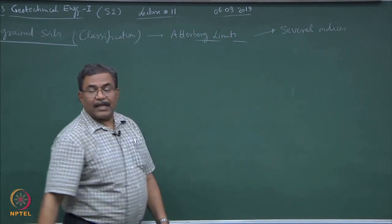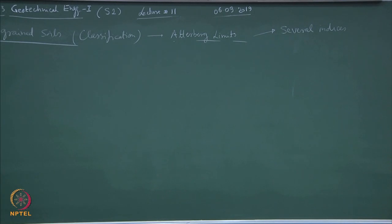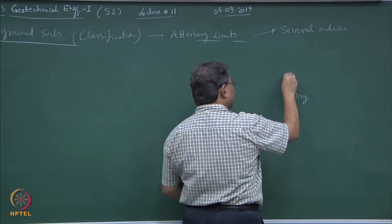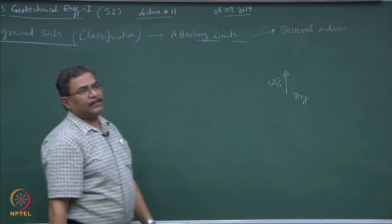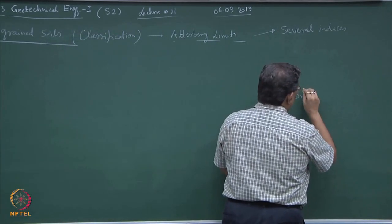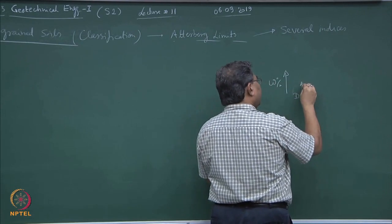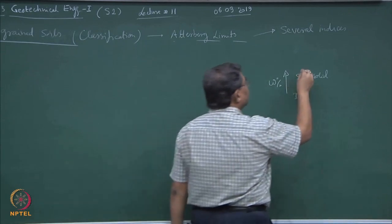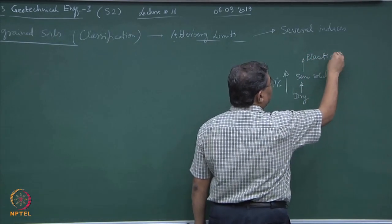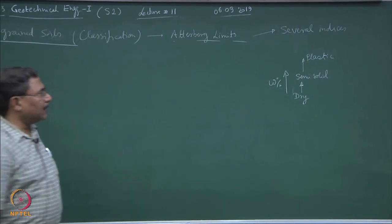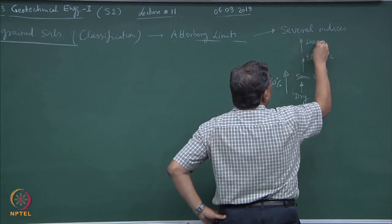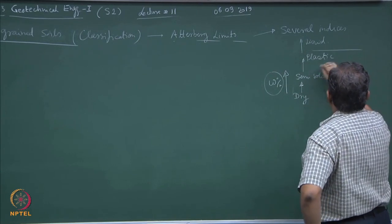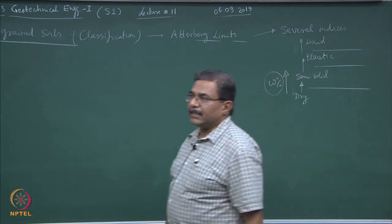As I said in the first lecture, soil is something which changes its characteristics when it comes in contact with water. Suppose if I start from a dry soil mass and add water, what is going to happen? The state of the material keeps on changing. From dry it will become semi-solid. If I further add water, from semi-solid it will become plastic. And if I further keep on adding water, it will become liquid. All this is happening just by addition of moisture.